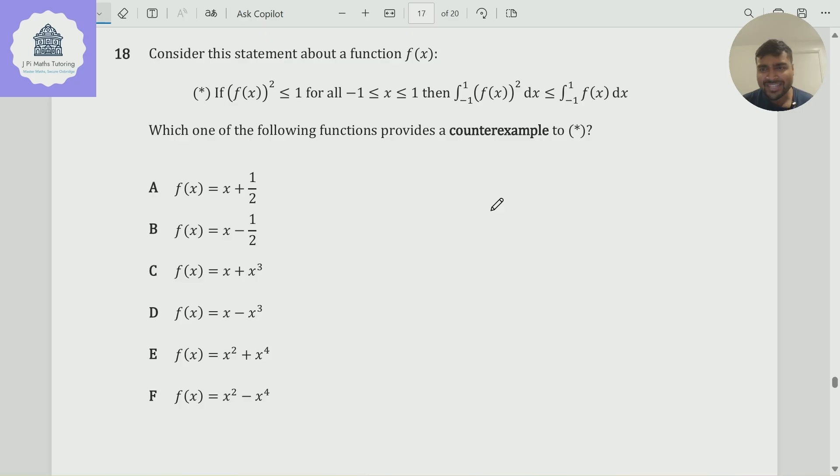That's enough waffling from me. Let's have a look at this question. This is from paper 2 2016, the practice paper they had. We want to consider this statement about a function f(x): if f(x)² ≤ 1 for all x between -1 and 1, then the integral from -1 to 1 of f(x)² dx is less than or equal to the integral from -1 to 1 of f(x) dx.